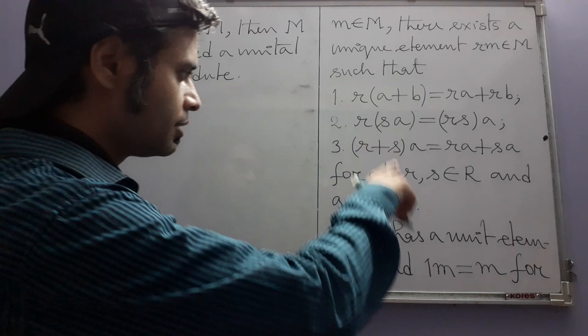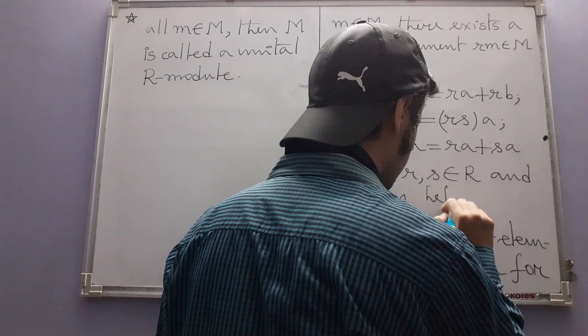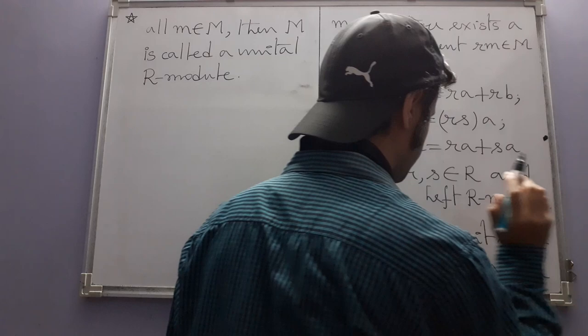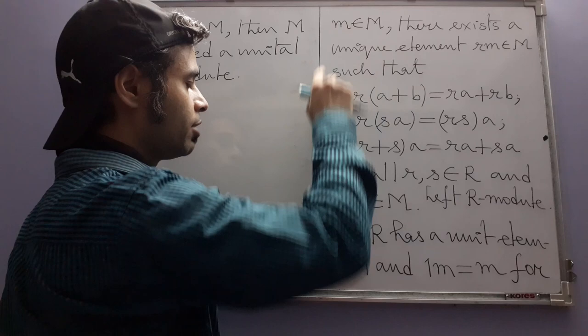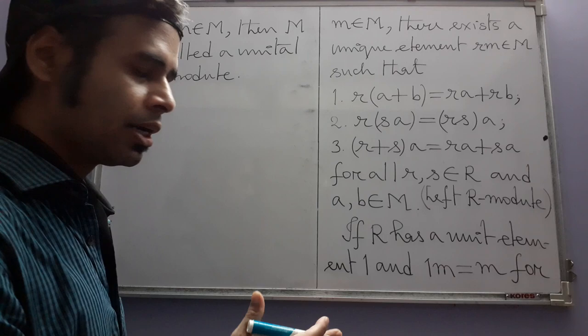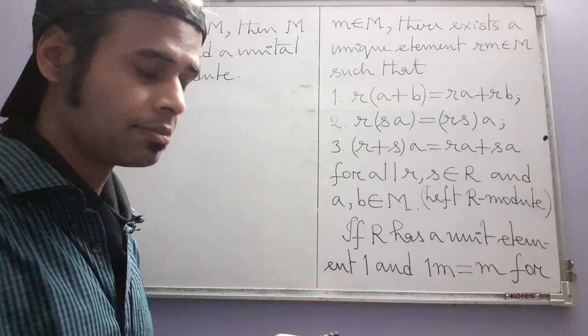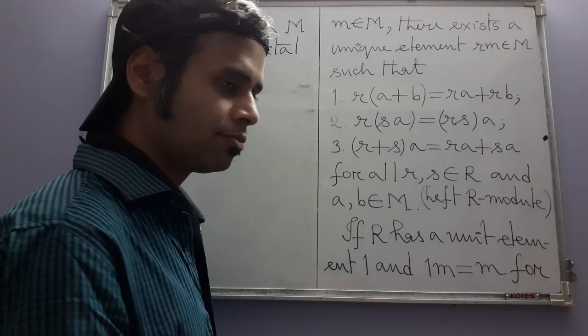Strictly speaking, this definition is actually the definition of a left R-module, because we are multiplying module elements from the left by ring elements. There is a corresponding notion of right R-modules as well. However, we will not use that distinction in this book because it will not be needed, though that other notion does exist.